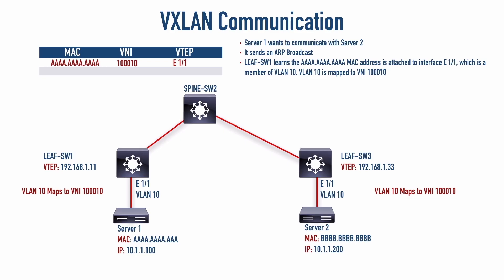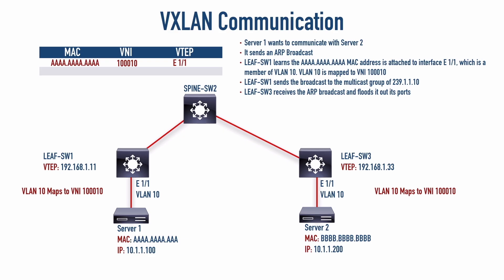For that BUM traffic, leaf switch one sends it out to a multicast group that other switches have joined. Leaf switch three sees it because it's a member of multicast group 239.1.1.10. When it receives that ARP broadcast via multicast, it floods it out all its other ports, reaching server two. Server two responds with its MAC address — the all-B's MAC address — back to leaf switch three. Switch three now knows that 10.1.1.200 with the all-B's MAC address lives off port Ethernet 1/1, and it responds to the other VTEP.